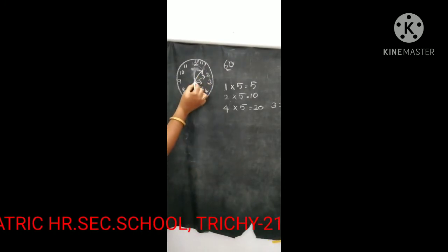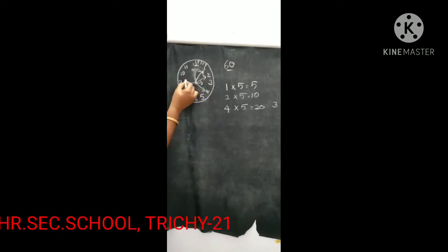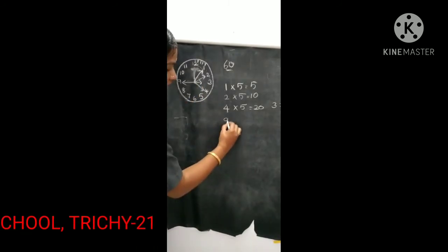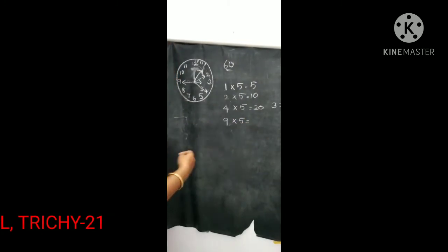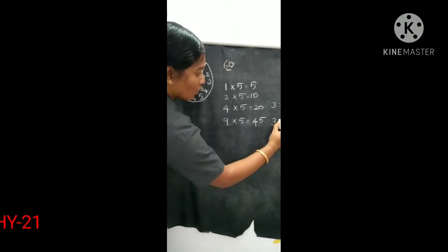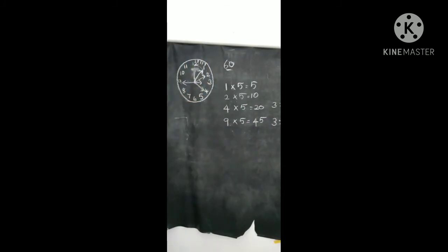Then again, the minute hand has moved to 9. So, minutes hand is on 9 means 9 multiplied by 5 — 9 fives are 45. So, now the time is 3 o'clock and 45 minutes.